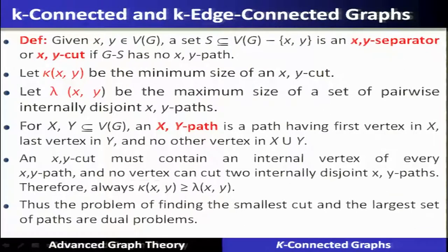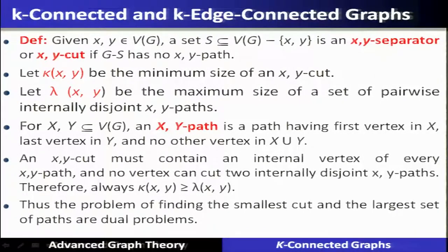Now we will go ahead to K-connected graphs and K-edge-connected graphs. We started with two-connected graphs; now we generalize the connectivity up to K, which can be more than two. There are two different types of connectivity: K-vertex-connected and K-edge-connected graphs.